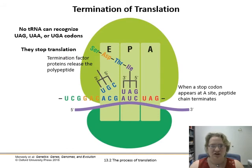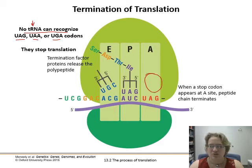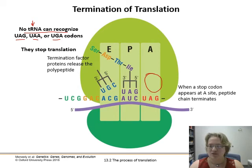Finally, in termination, there are no tRNAs that recognize the stop codons: UAG, UAA, and UGA. They stop translation because there is no tRNA that can recognize them — the site is just empty. At that point, termination factor proteins release the polypeptide. The stop codon appears at the aminoacyl site — that's when the peptide chain terminates. There's a lot of specific terminology in this particular chapter.